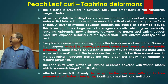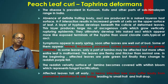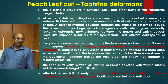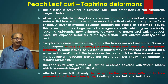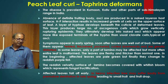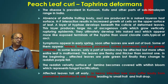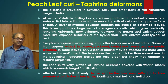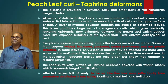The next disease is peach leaf curl. Earlier we discussed leaf spot of turmeric, which is caused by Taphrina maculans, but here the species is Taphrina deformans, so it differs at the species level and the symptoms are entirely different. The disease is prevalent in the northern Indian hilly region, including Kumaon, Kullu, and other parts of the Himalayan range of India.